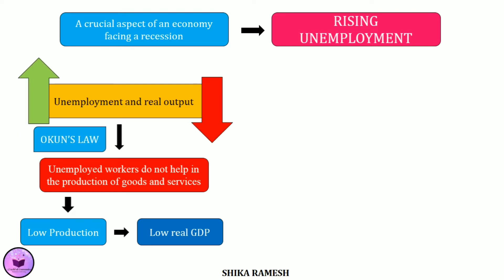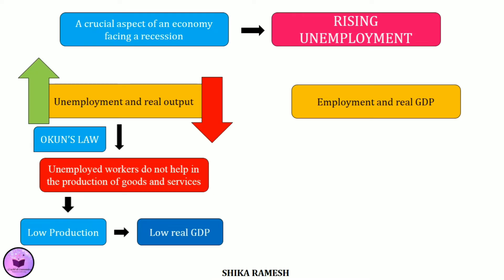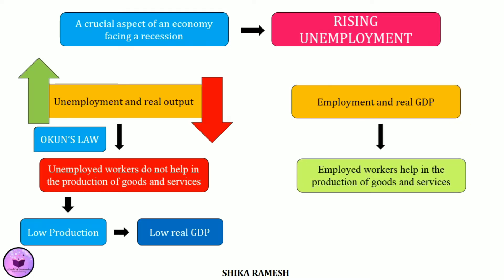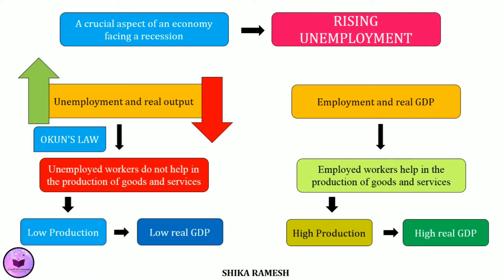It can be stated in another way as well. Instead of unemployment, if we take into account the employment variable, then we can see that there is a direct or positive relationship between employment and real GDP. That is, if employment is increasing, then real GDP in an economy will also increase. Because when employment increases, more and more people are getting employed, so employed workers are helping in the production of goods and services. That means there is higher production of goods and services and ultimately the real output is also high.